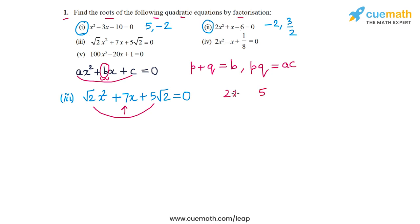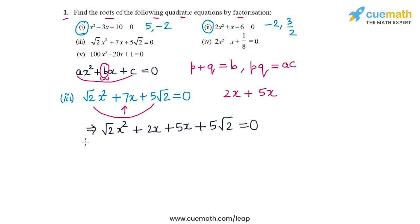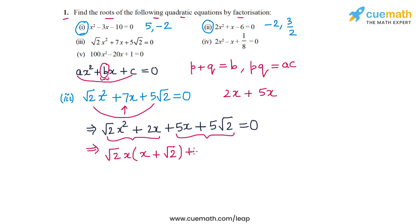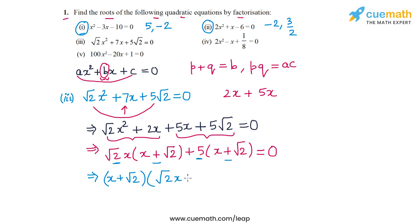We split the middle term 7x as 2x + 5x, giving us √2x² + 2x + 5x + 5√2 = 0. From the first pair √2x² + 2x, we take out a common factor of √2x, leaving x + √2. From the second pair, we take out a common factor of 5, leaving x + √2 again. So we get √2x(x + √2) + 5(x + √2) = 0.